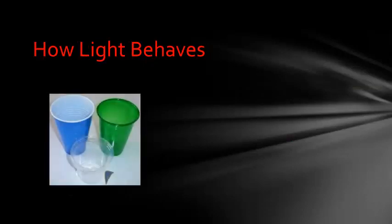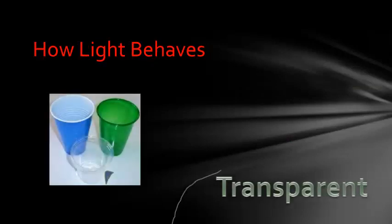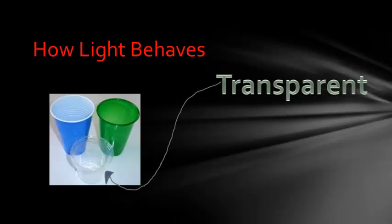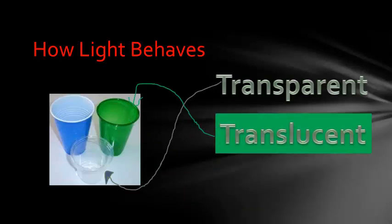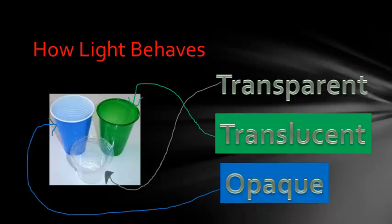Light does different things when it hits different surfaces. Clear materials, like glass, are called transparent. These items allow light to travel right through them. Items that allow only some light to travel through them, like wax paper, are called translucent. And items like brick walls or a textbook block all light and are called opaque.